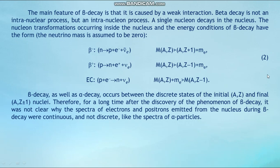Beta decay, like alpha decay, occurs between the discrete states of the initial nucleus (A, Z) and the final nucleus (A, Z±1). Therefore, for a long time after the discovery of beta decay, it was not clear why the spectra of electrons and positrons emitted from the nucleus were continuous and not discrete, as are the spectra of alpha particles.